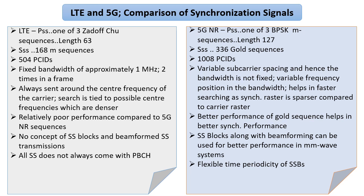As in LTE, in 5G NR we have PSS and SSS, but they are somewhat different. The length of the PSS sequence is different, and the type of sequences are also different. Instead of a ZC sequence, we now have an M sequence. The number of secondary sync sequences is increasing, and combined with the fact that SSS uses a Gold sequence, this increases the number of unique cell IDs from 504 to 1008, giving more room for small cell deployment.